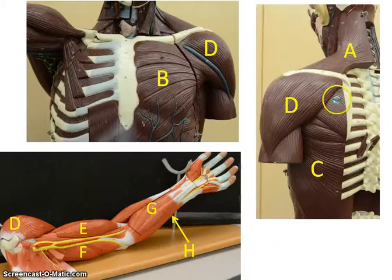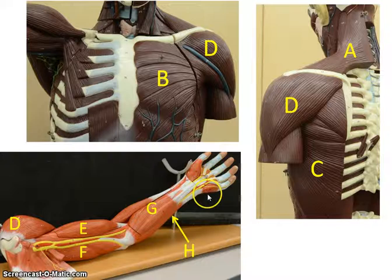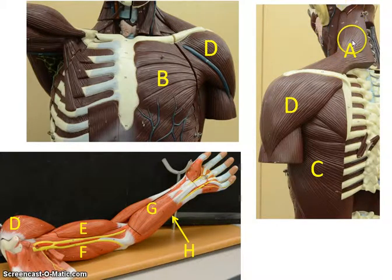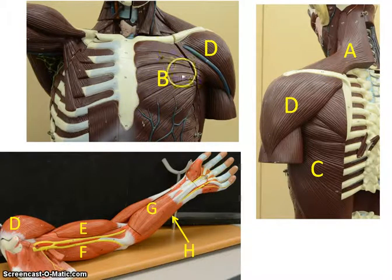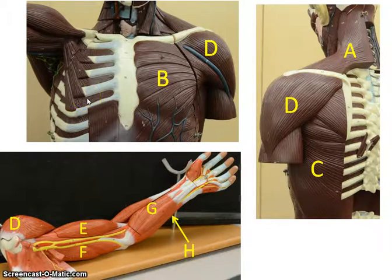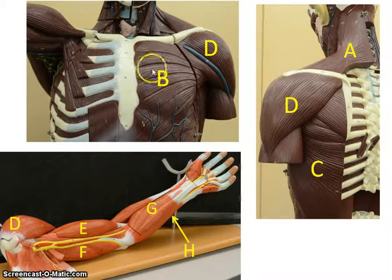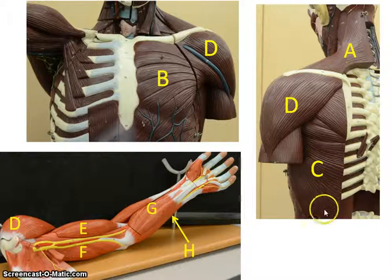Next we're going to do the back and chest muscles as well as the arm. We'll start up here with A, which is the trapezius. Remember, when you see a full trapezius muscle it looks like a kite. Here you see the spine of the scapula — it's a major attachment point. In the front we have the pectoralis major. Down here we have the latissimus dorsi.